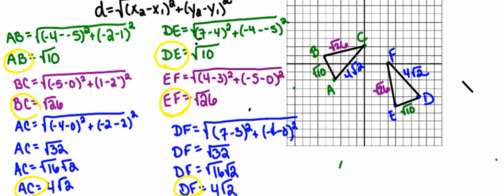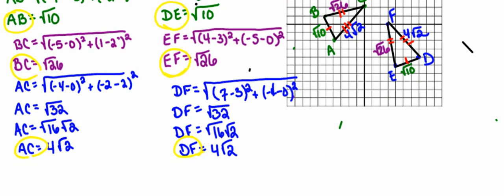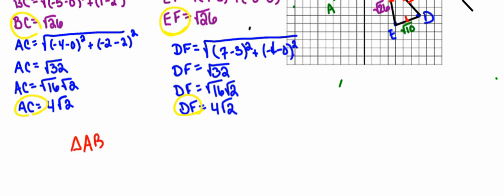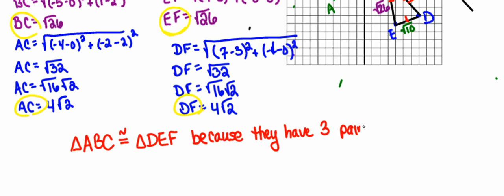So if I look at my picture, I've got side AB congruent to side ED because they have the same length. Side EF is congruent to side BC because they have the same length. And side AC is congruent to side DF because they have the same length. So I'm going to go ahead and say that triangle ABC has to be congruent to triangle DEF because they have three pairs of congruent sides, making them congruent by side, side, side.